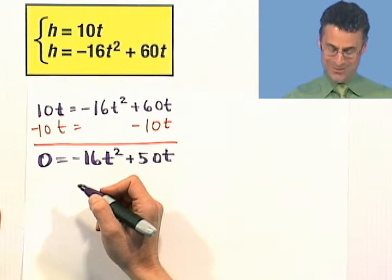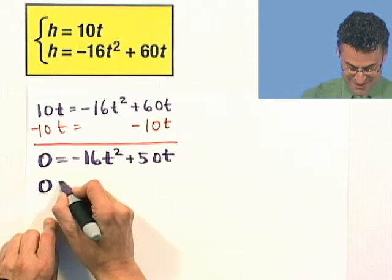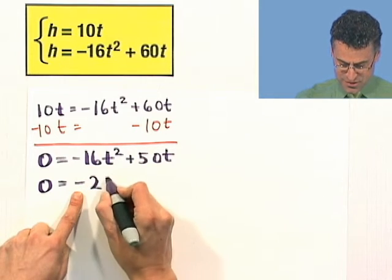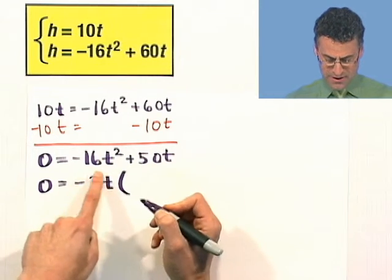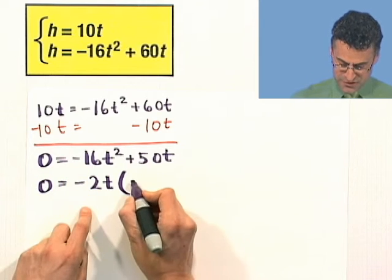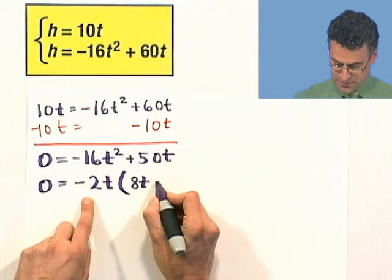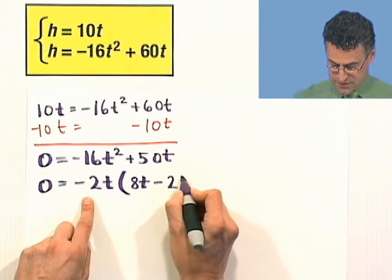Actually, I'm going to factor out a negative sign, so negative 2t. If I factor out a negative 2t from here, I'm going to be left with just a positive 8t. If I factor out a negative 2t here, I'm left with negative 25.